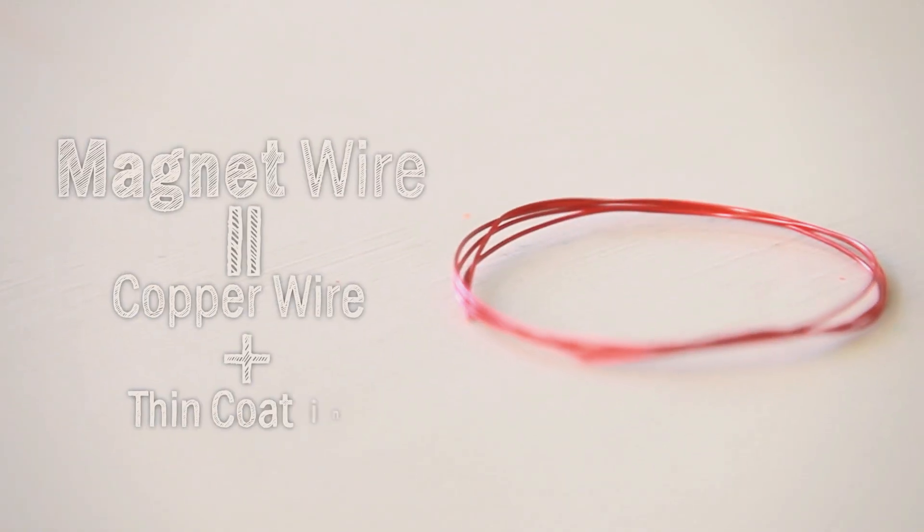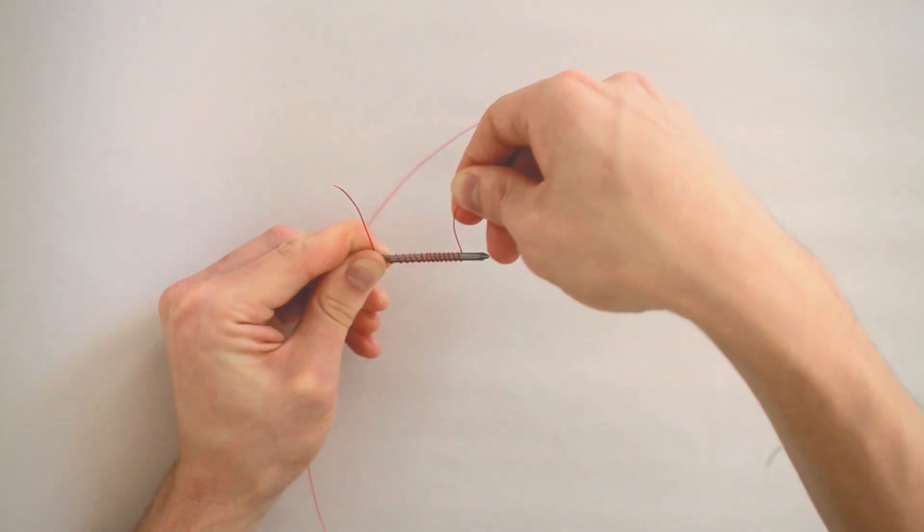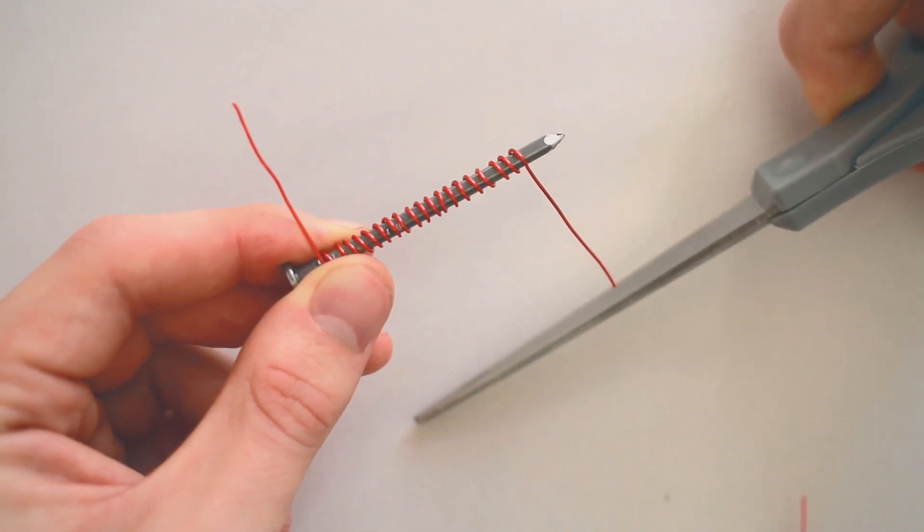Magnet wire is just copper wire with a thin coating on top of it. Uncoated wire won't work. When you're done wrapping your wire, leave a little bit sticking out and cut it with your scissors.